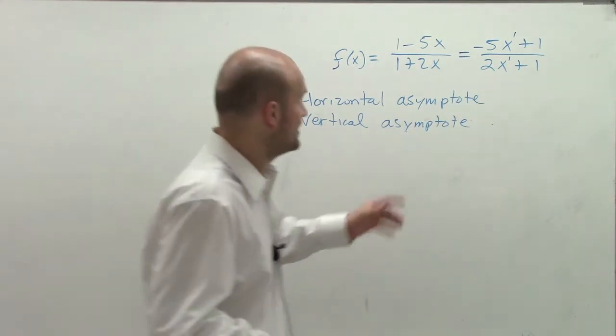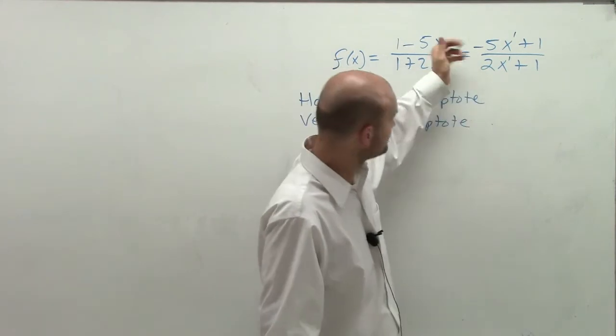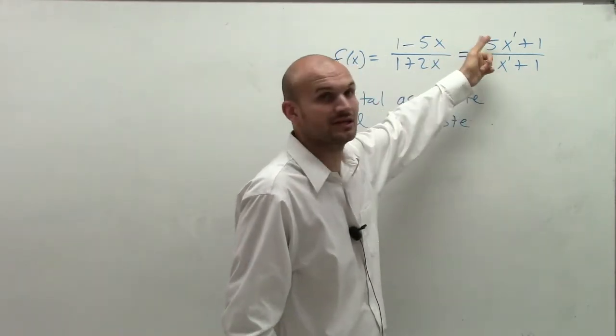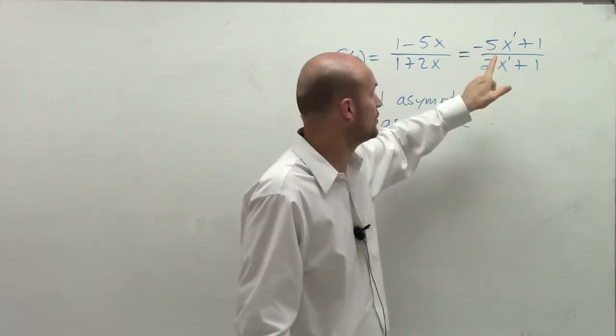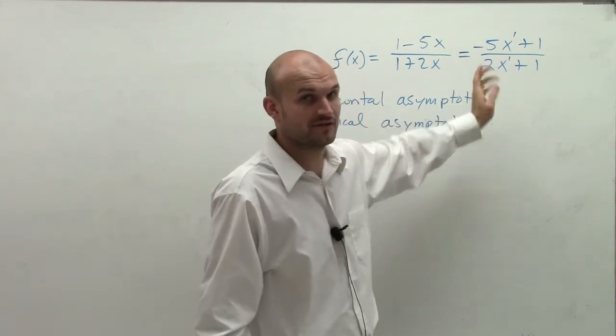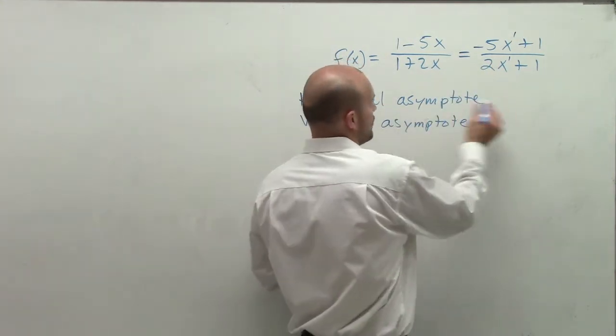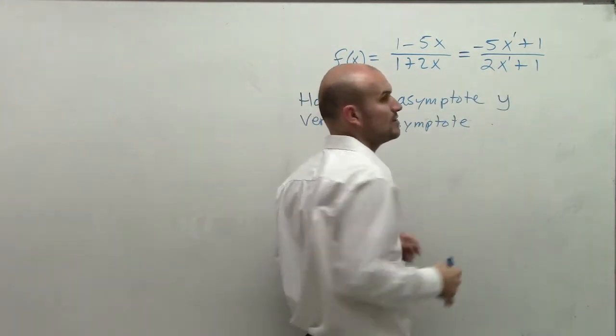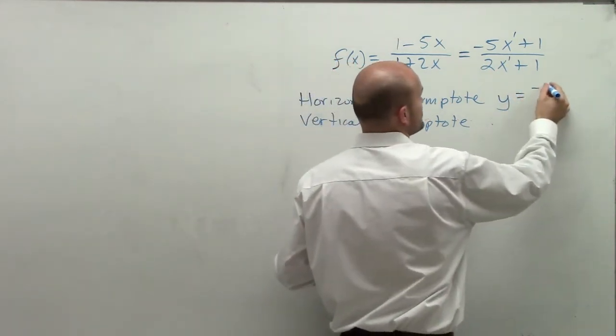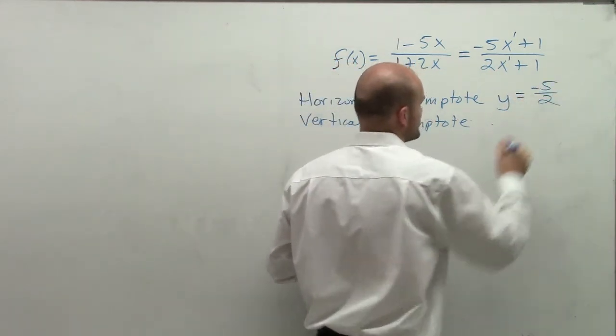our horizontal asymptote is now going to be the division of our leading coefficient for our top polynomial over our leading coefficient for our bottom polynomial. So the horizontal asymptote per the horizontal asymptote test is y equals negative 5 over 2.